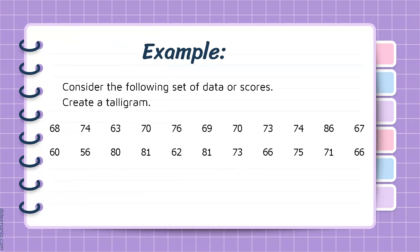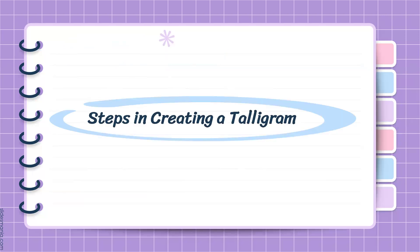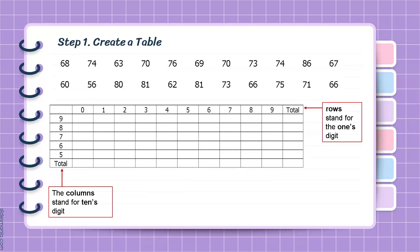Let's consider the following set of data. Let's create a Talligram. What are the steps in creating a Talligram? Step 1 is to create a table. The columns stand for the tens digit. Let's look at the distribution of scores. In this example, the highest score is 86.